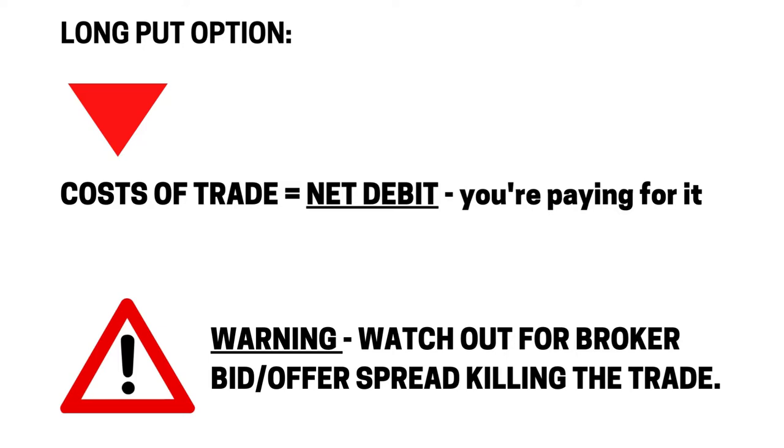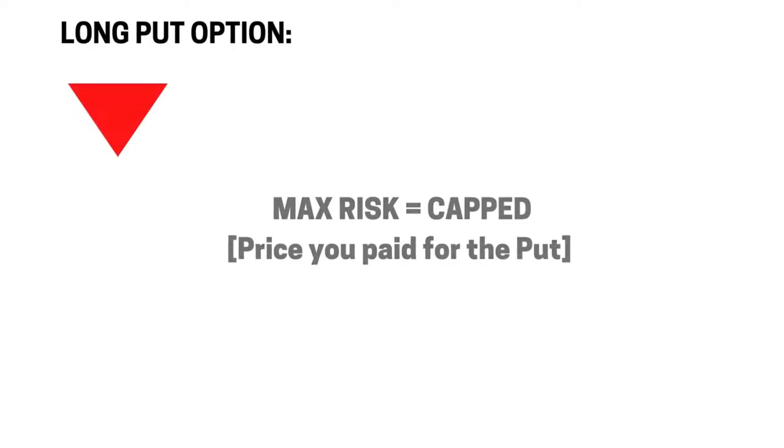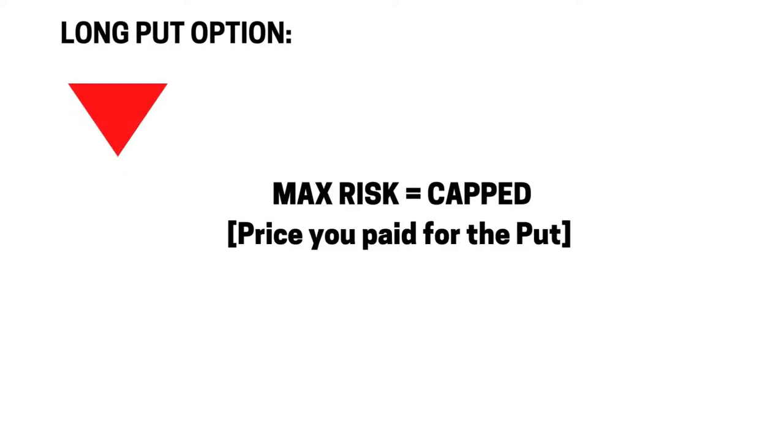As you get more experience you can adjust this — you might go for way out-of-the-money strikes that are more of a punt at low cost, and that could be your strategy. But for starters, working around those rules should keep you okay. Don't forget the cost of the option — it's a net debit, you're paying for it. Also make sure your broker isn't killing the trade idea with a wide bid-offer spread, which often happens more in complex options setups. Keep an eye on that spread so you're not paying unnecessarily.